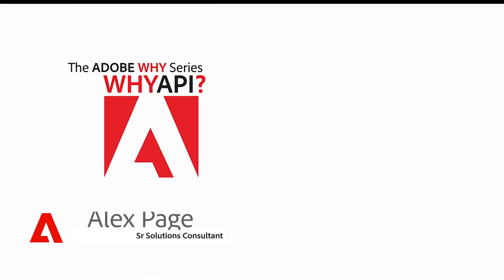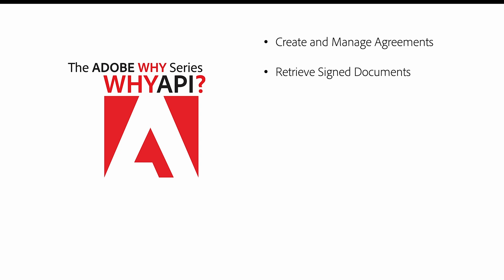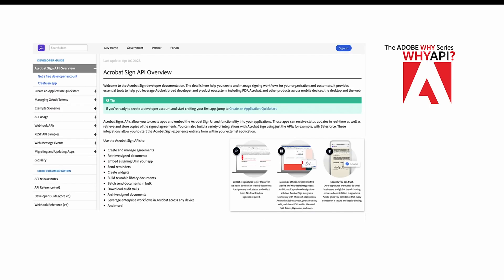Hello all. In the previous video we learned why API — because by using the Acrobat Sign API, you can easily embed the functionality of Adobe Acrobat Sign into your applications and custom workflows. Using the Acrobat Sign API, you'll be able to create and manage agreements, retrieve signed documents, embed the Acrobat Sign UI, set reminders, send agreements in bulk, download audit trails, archive signed agreements, and more. That's the flexibility and the power of Adobe Acrobat Sign's API.